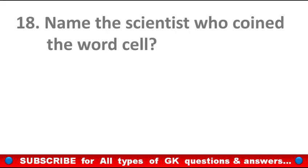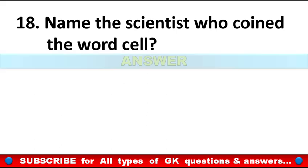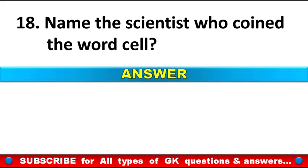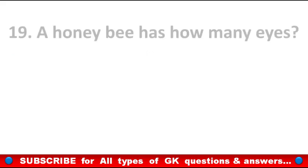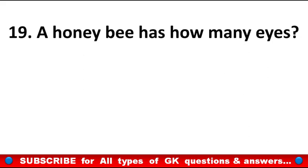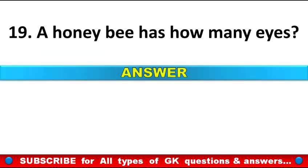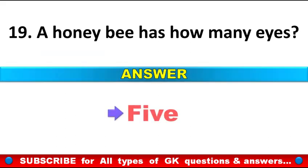Name the scientist who coined the word cell. Answer: Robert Hooke. A honey bee has how many eyes? Answer: Five eyes.